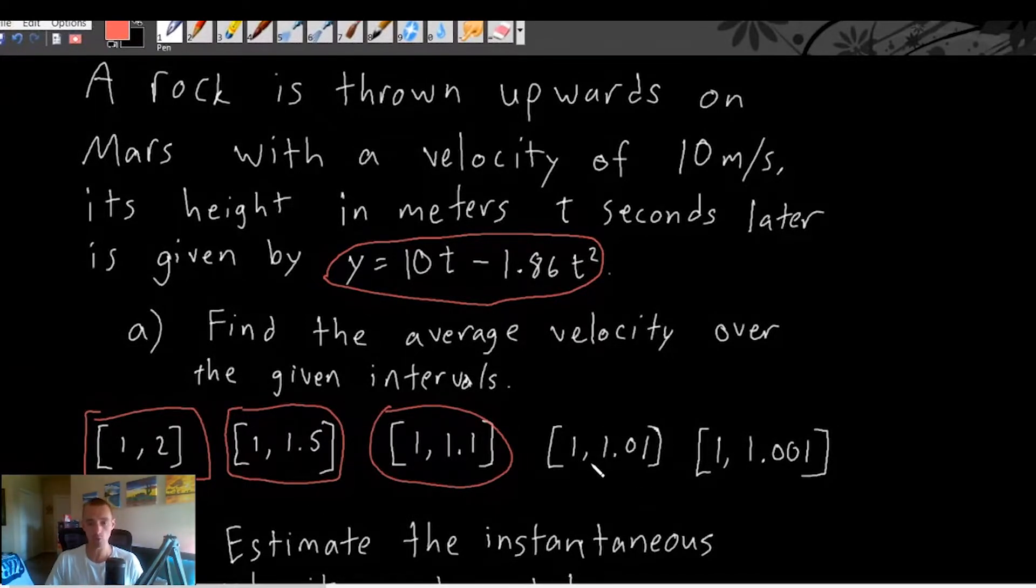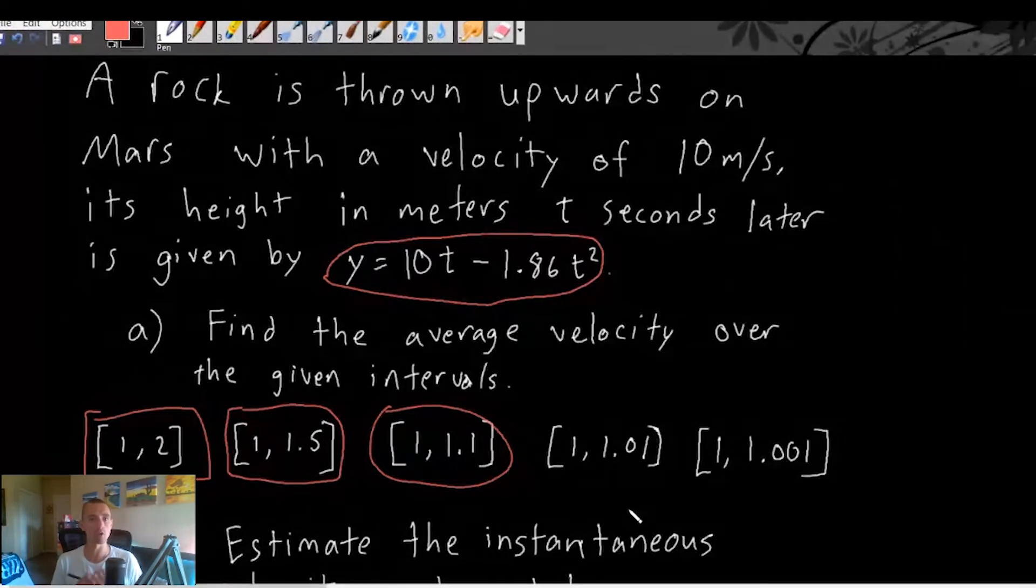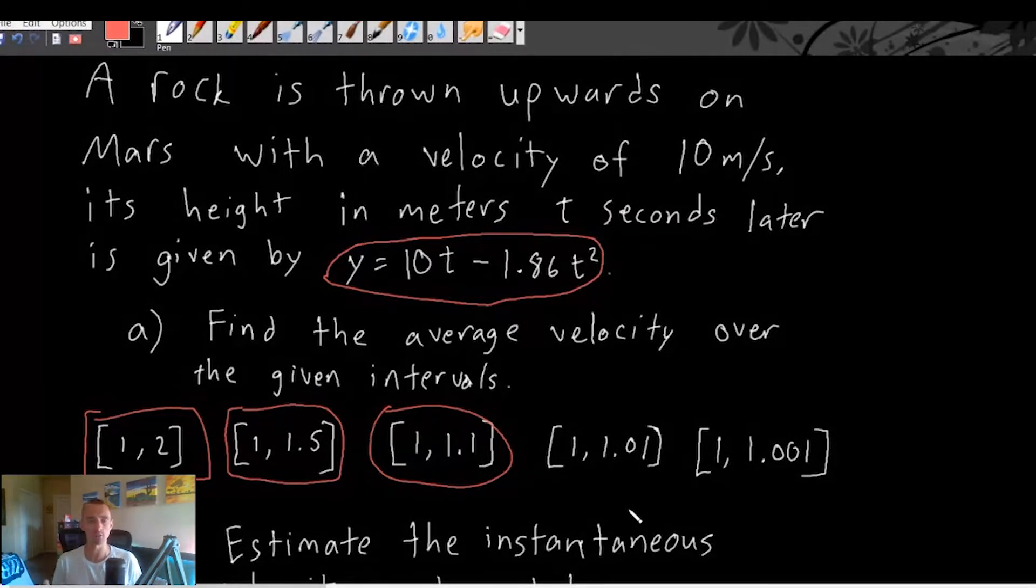A 0.1 second interval, 0.01 second, 0.001 second. So they can be however short or long you want them to be, but average velocity should always be found over an interval of time.